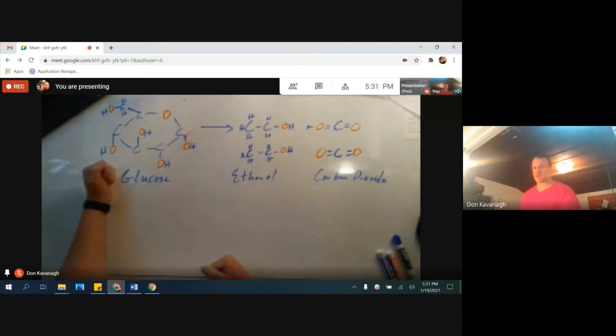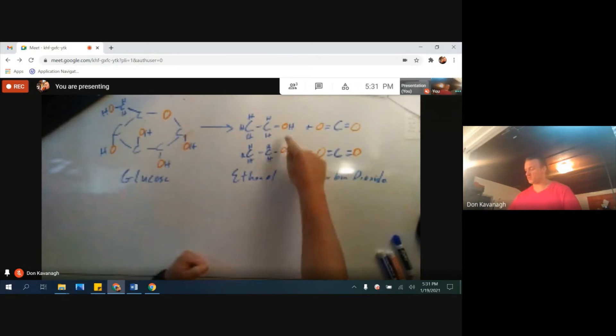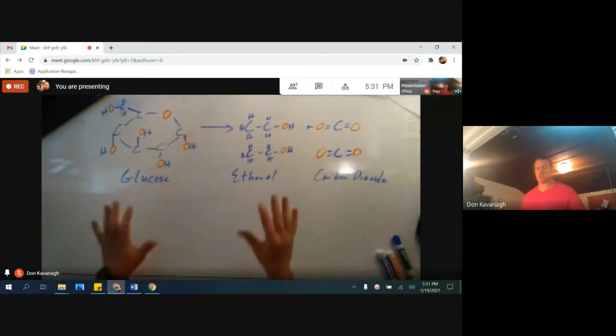There are six oxygens over here. And over here we have one, two, three, four, five, six. Any chemical reaction, any production assembly line must be balanced, the input with the output.